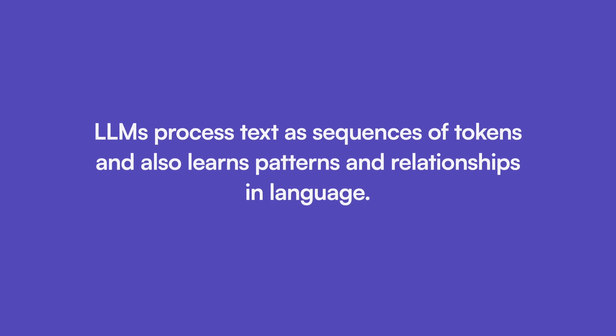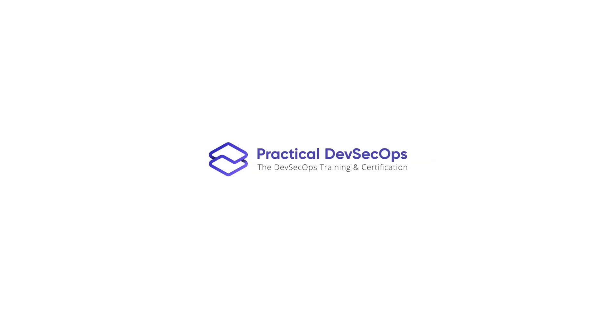LLMs are based on transformer neural networks using attention mechanisms. LLMs process text as a sequence of tokens and learn patterns and relationships in language. Even though it might look like LLMs possess actual understanding, in reality LLMs are actually good at guessing the next syntactically correct word.